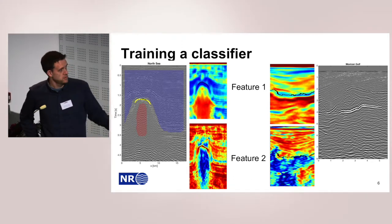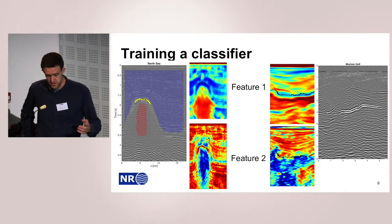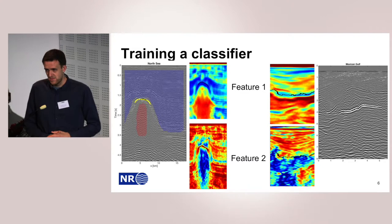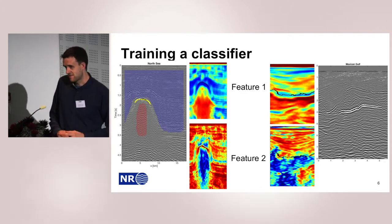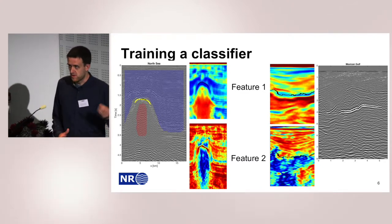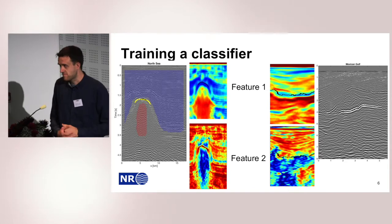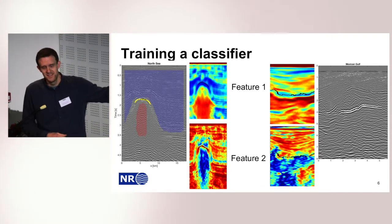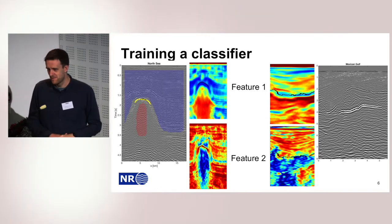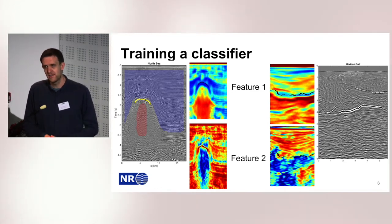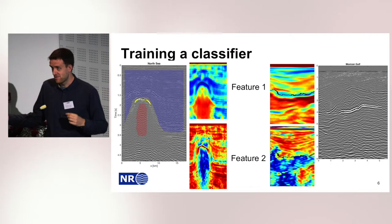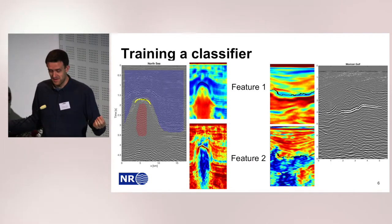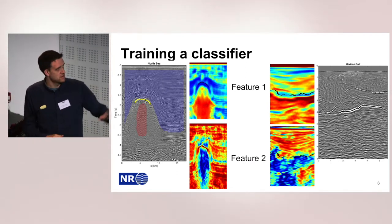Maybe we want to find some faults or salt bodies. The main assumption behind doing machine learning is that there is a relationship between our input data and our output data. This should not be taken for granted, because sometimes people want to do machine learning when there really is no connection between the output data and the input data. That's the fundamental assumption — that there is some relationship.